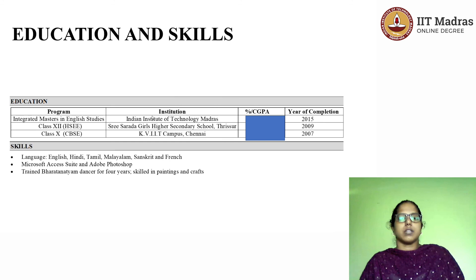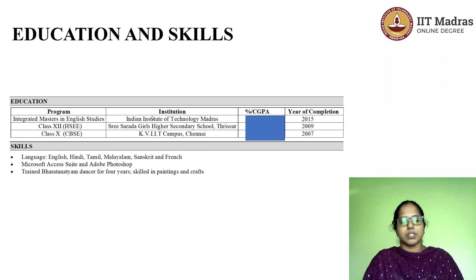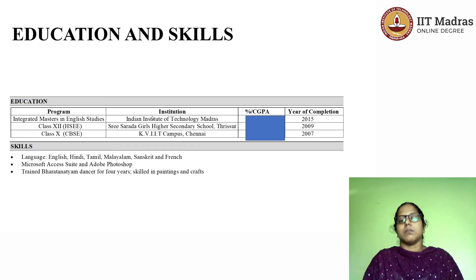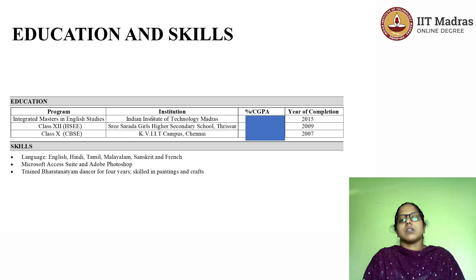Then comes education and skills. In the column for education, you write the program, the institution, the percentage or CGPA, and then the year of completion. It's very important to write about skills because that speaks a lot about you — what your passion is and what you have done so far in life. As part of skills, you can write your technical skills, language skills, and hobbies. Language skills: English, Hindi, Tamil, Malayalam, Sanskrit, and French. Technical skills: Microsoft Access and Adobe Photoshop.